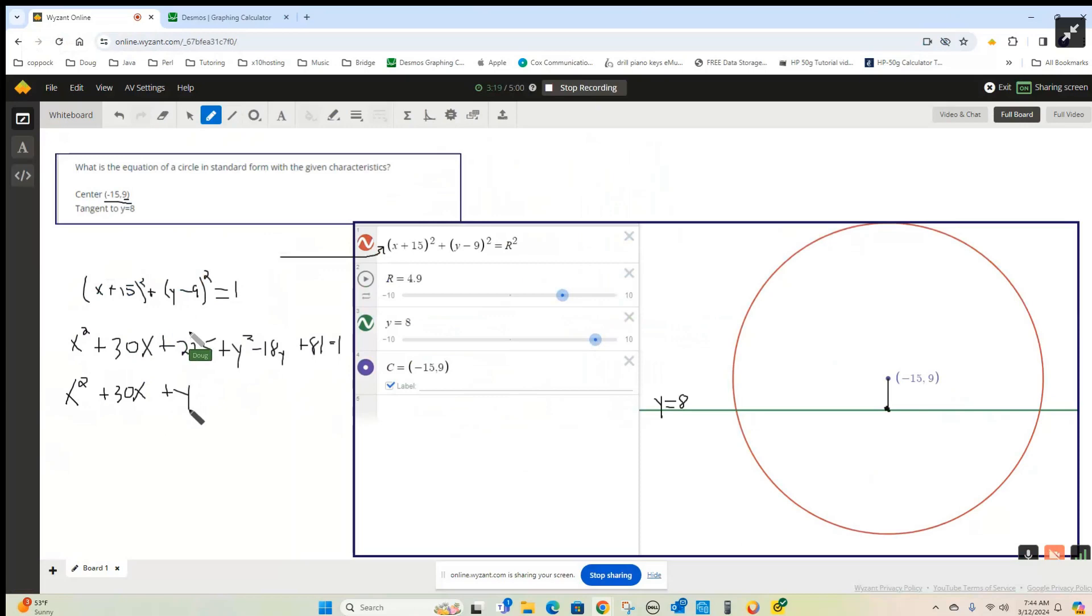This is x squared plus 30x plus y squared minus 18y. I'm going to have 225 plus 81, 306, minus this 1 that's on the right side of the equal sign. So plus 305 equals 0.